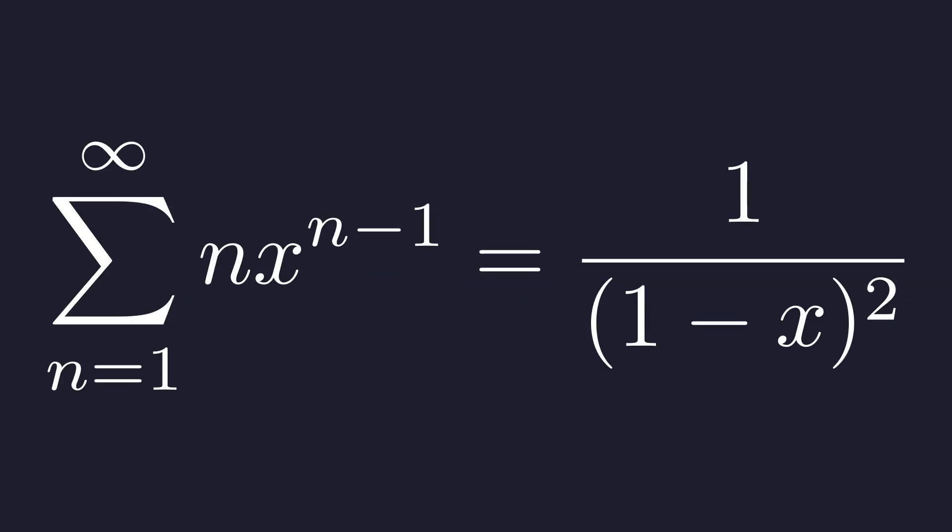Now we equate our results from the left and right sides to find the answer. So, we have discovered a new identity. The sum from n equals 1 to infinity of n times x to the n minus 1 equals 1 over the quantity 1 minus x squared. This resulting series is incredibly close to our original problem. We just need to adjust the index of summation to make them match perfectly.